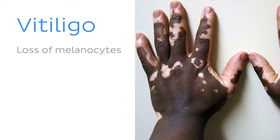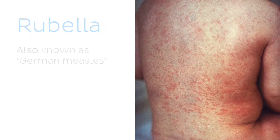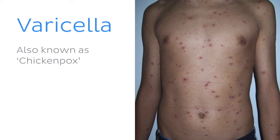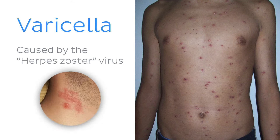Two viral conditions well-known to affect the skin: rubella, or German measles, is characterized by a fine red rash beginning at the face and neck, rapidly spreading across the whole body within 24 hours and lasting about 3 days. Varicella — chickenpox — is characterized by a spotty macular rash which progresses into blister-like vesicles filled with clear fluid; after a day or two they become yellow and pustular before drying and forming a crust. It is caused by the herpes zoster virus, which also causes shingles.